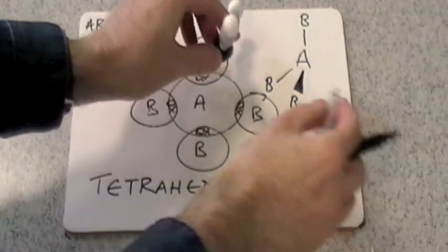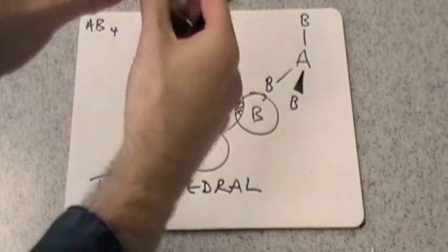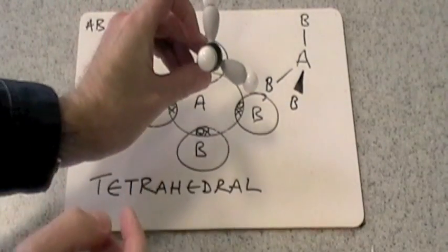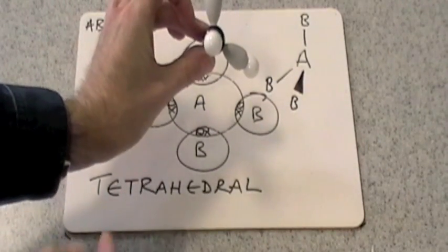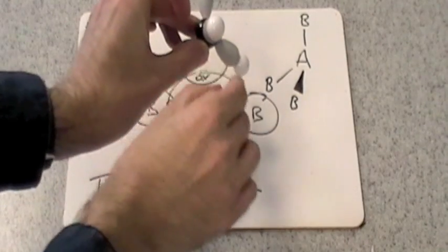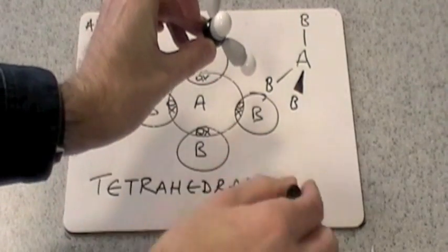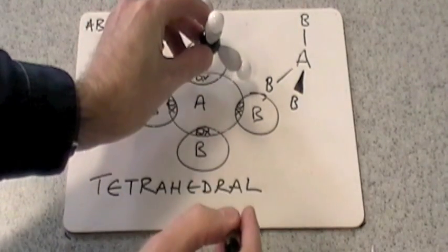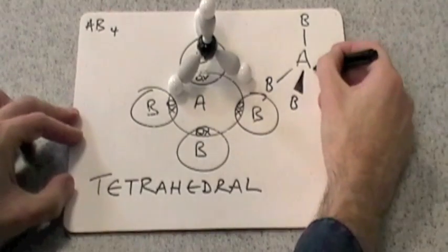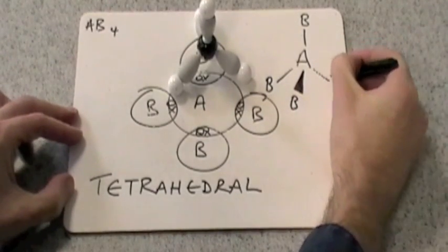Now unfortunately, because this board is solid, I can't do the last one. So I've just got to hold it. But you can see that this one, if it could, would be going into the board. So we show that as a dashed line.